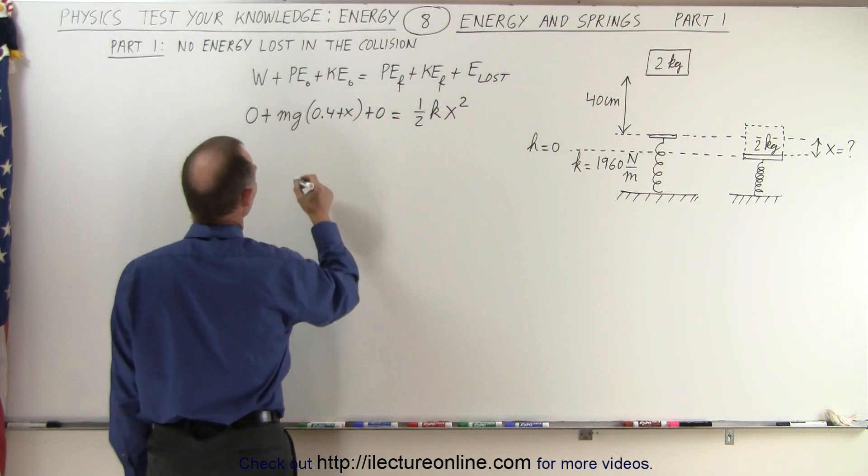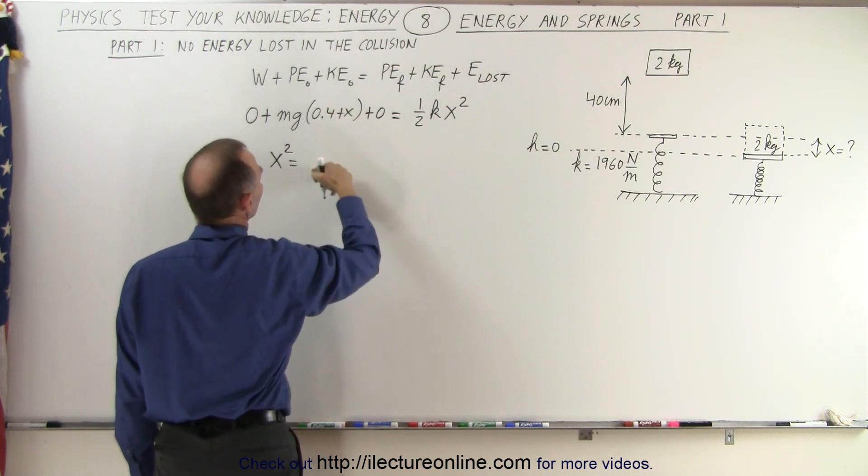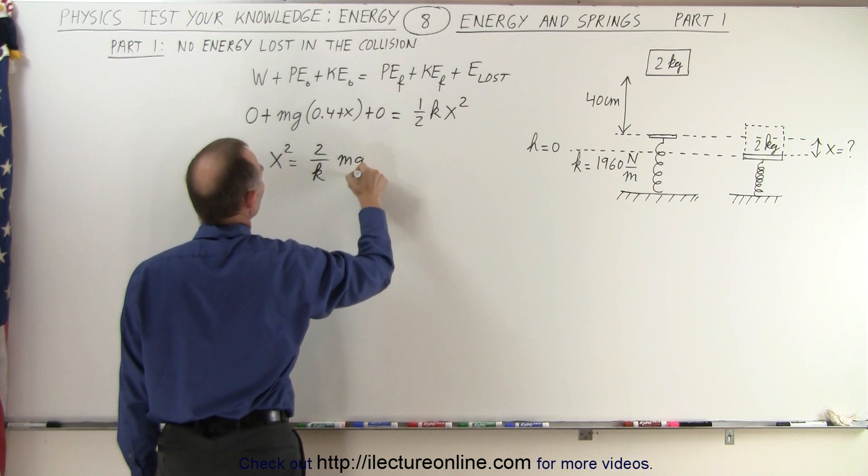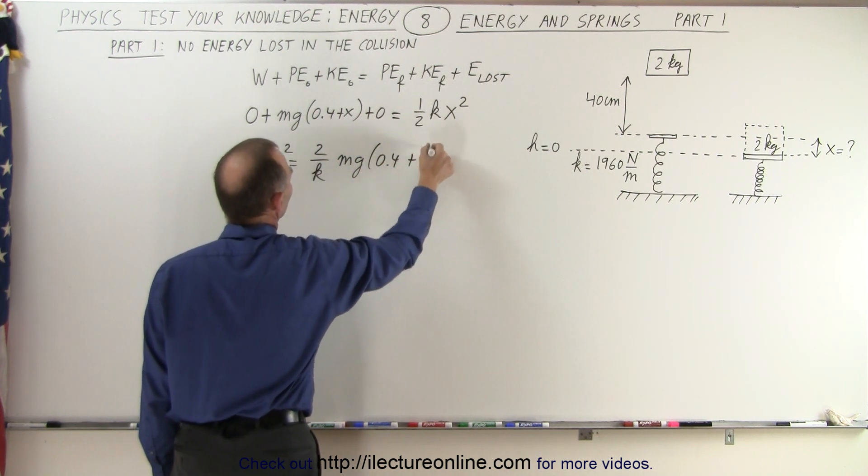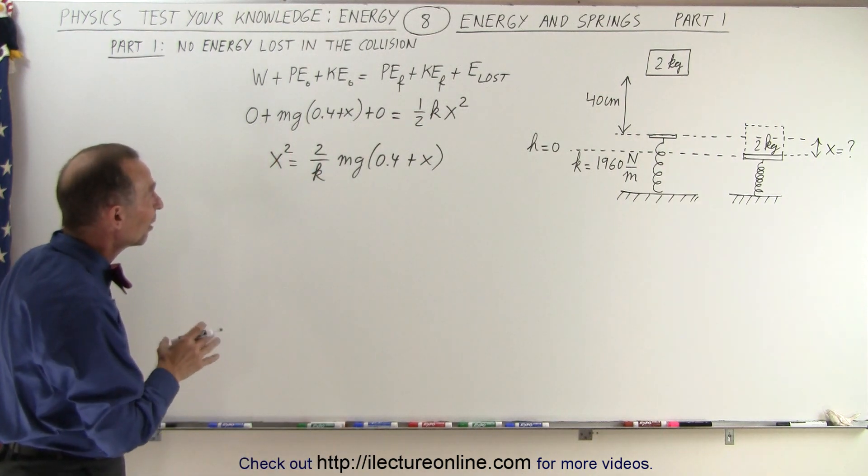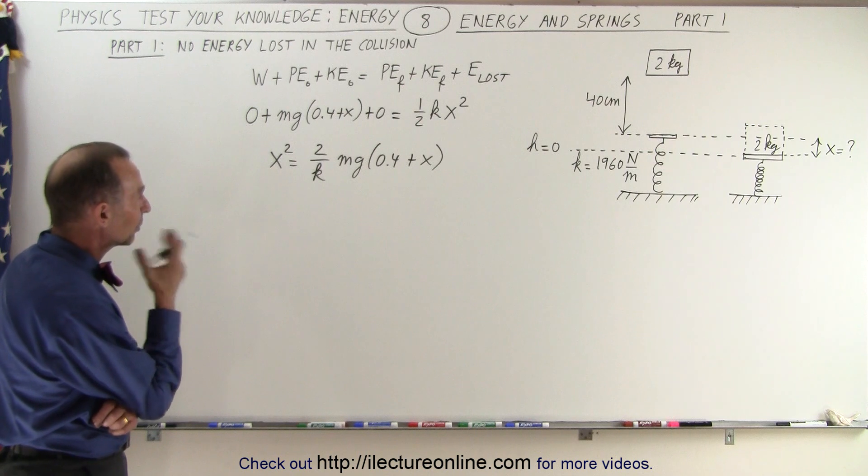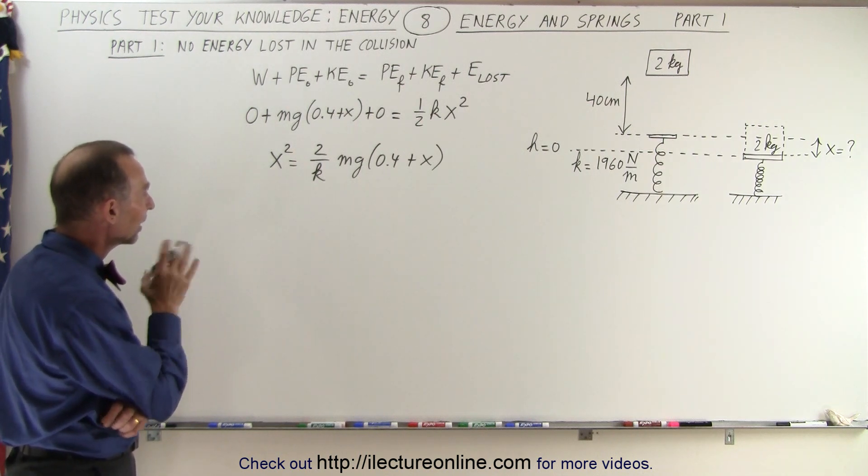So that means that x squared is equal to, when we bring the two across and the k down, then I have 2 over k times mg times 0.4 plus x. And notice it looks like we still are going to have an x term in there. On the right side, it looks like we're going to end up with a quadratic equation.